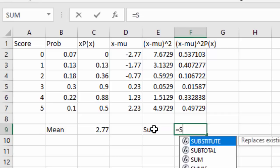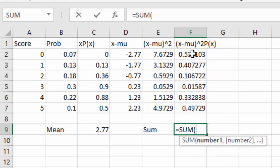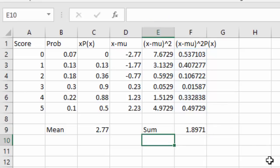Now we can find the sum by saying equals sum, open a parenthesis, and selecting all the data values. That gives us a sum of about 1.89. A little smaller than we had when we were rounding, we had 1.91, but that's just a round off error.